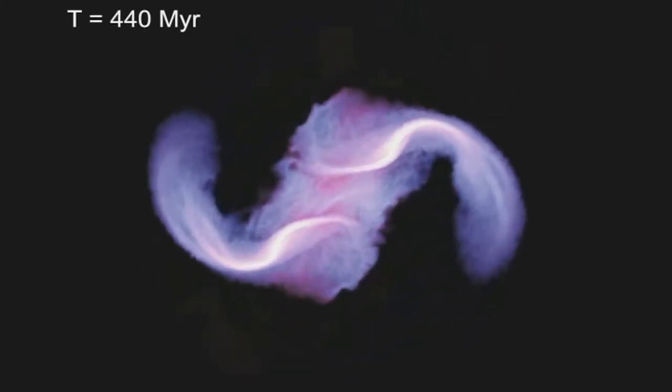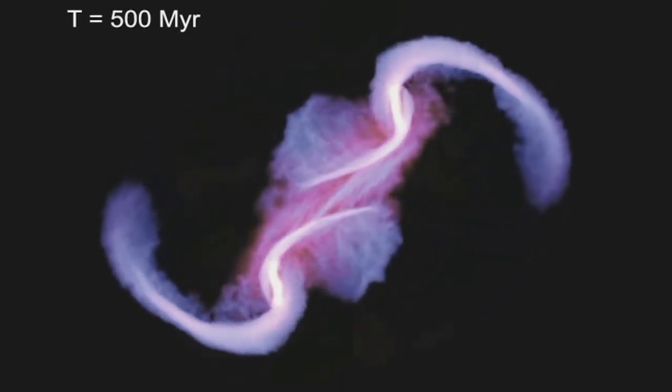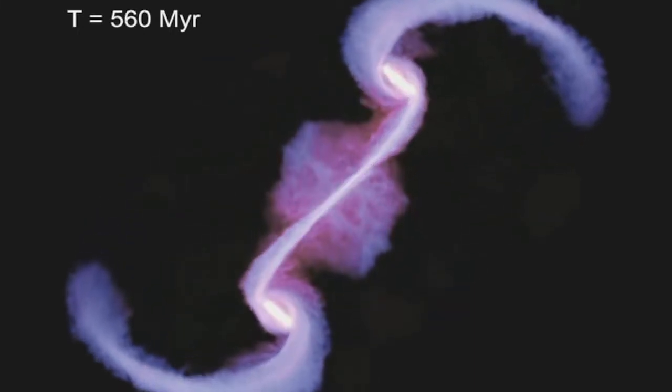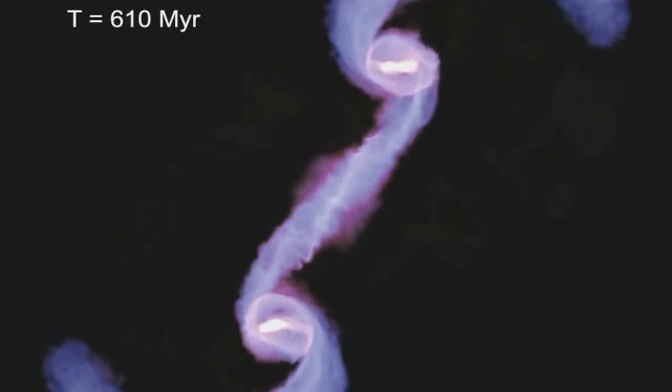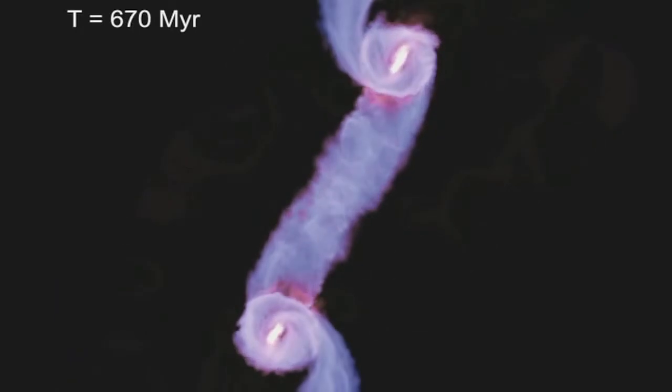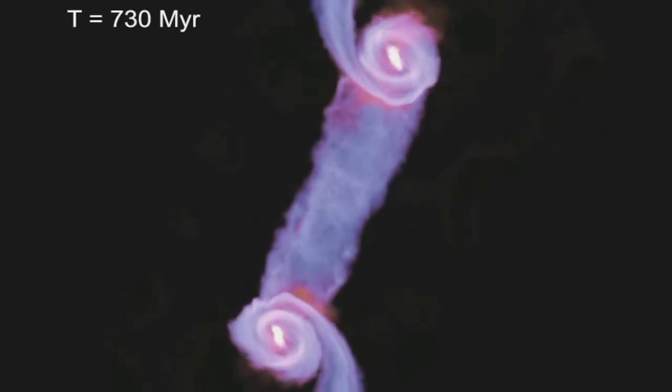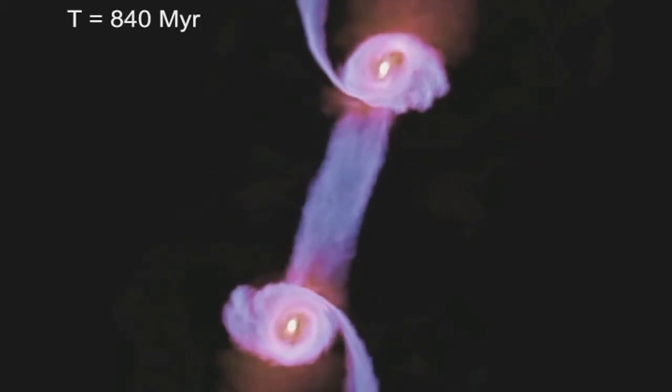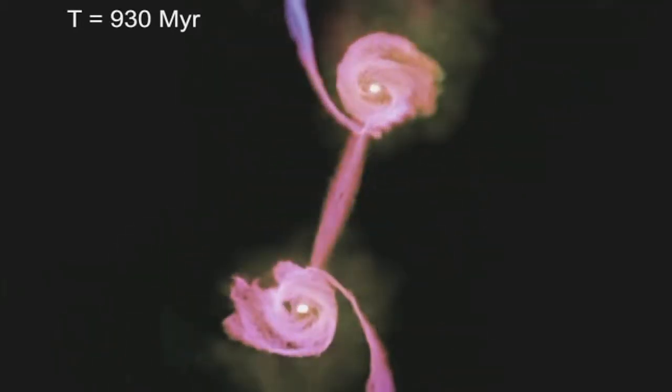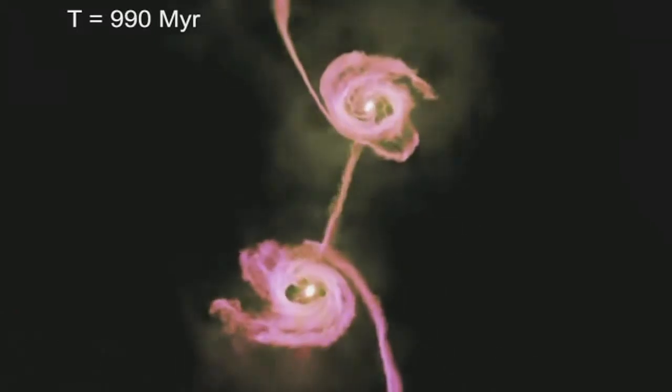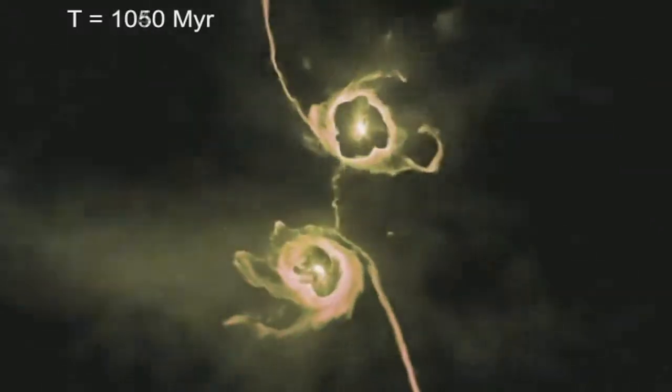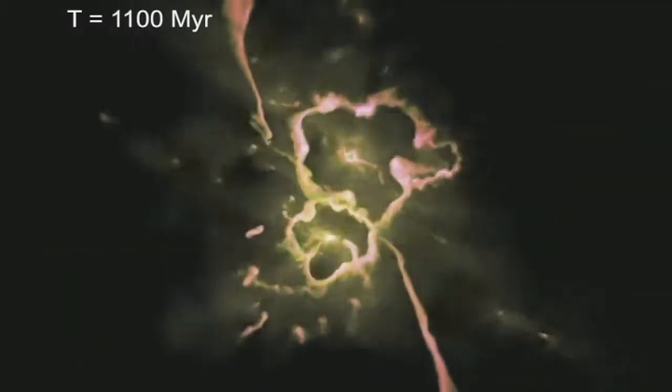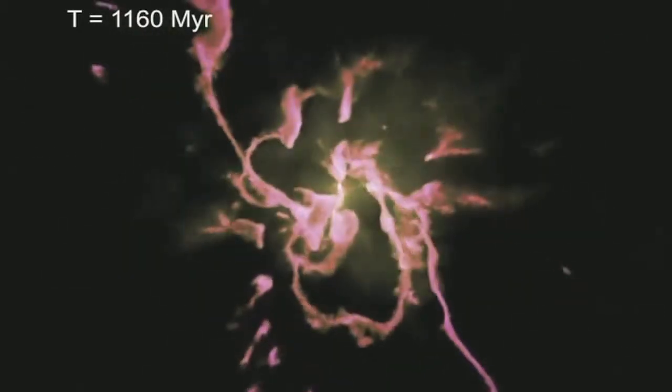This computer simulation shows the fate of gas in the merger of two galaxies with black holes embedded in their cores. As the two pass each other by, the pull of gravity disrupts their spiral shapes, forcing huge volumes of gas into their cores. As these black holes continue to feed, they emit a series of powerful shockwaves that push much of the loose gas beyond their boundaries.